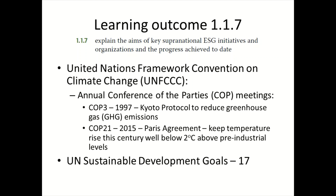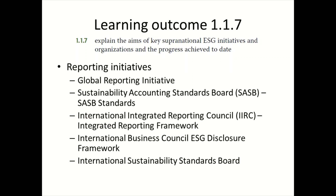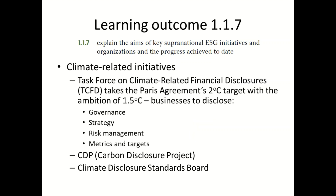There are 17 UN Sustainable Development Goals — try to remember at least some of them. There are also a number of reporting initiatives: the Global Reporting Initiative, the ISSB — International Sustainability Standards Board — the International Integrated Reporting Council, and the International Integrated Reporting Framework. One of the most important is the TCFD — Task Force on Climate-related Financial Disclosures — which lays down things businesses should disclose regarding climate-related financial disclosures, including governance, strategy, risk management, and metrics and targets. Others include the CDP Carbon Disclosures Project and the Climate Disclosure Standards Board.